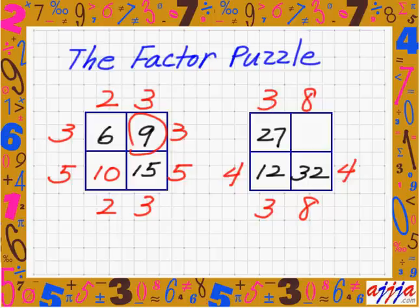Exactly the same. Now, 3 times what is 27? 9. Then must be 9 right there. So 8 times 9? 72. Very easy.